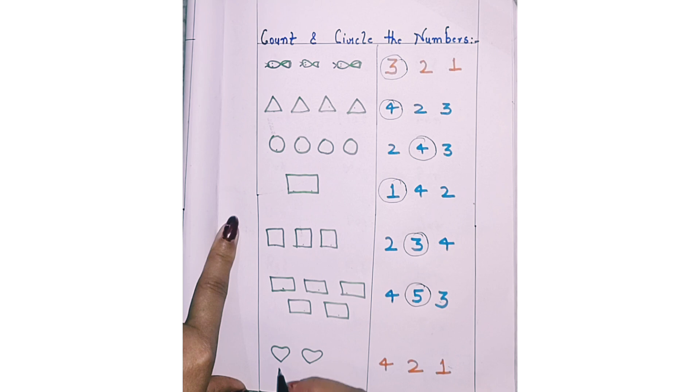Next. How many heart shapes are there? 1, 2. Circle 2. 4, 2, 1. Circle 2.